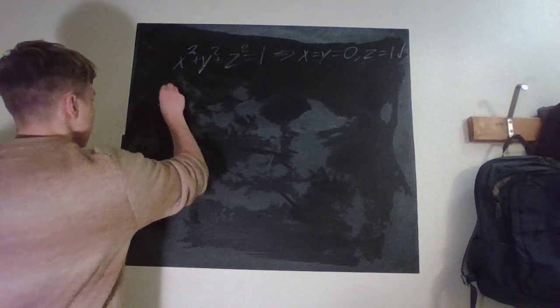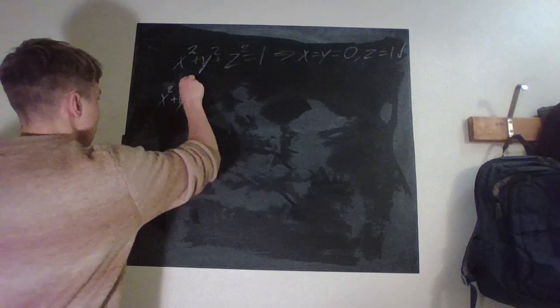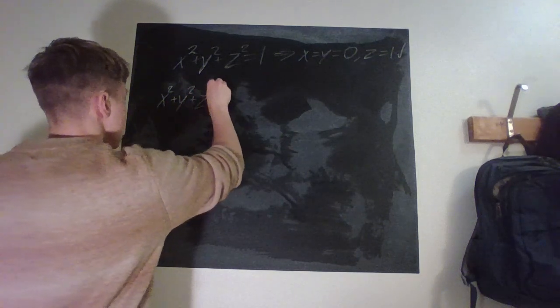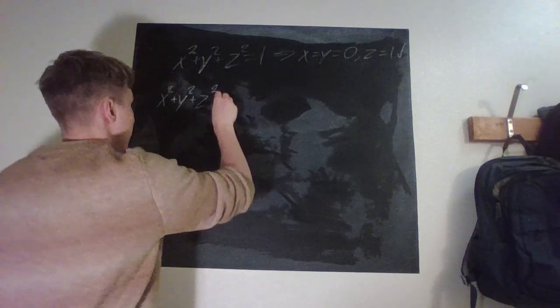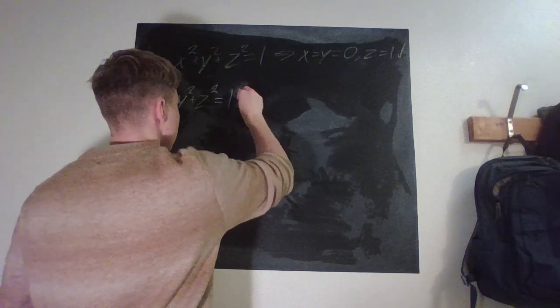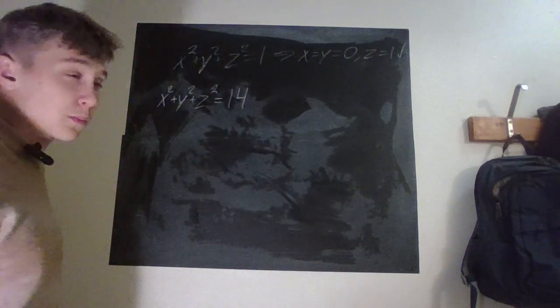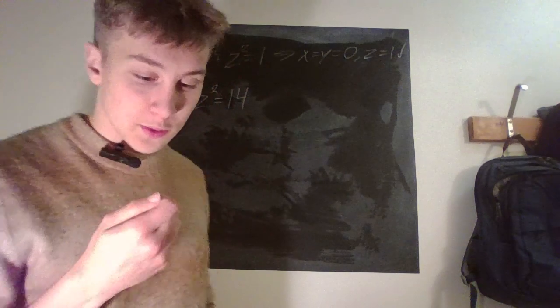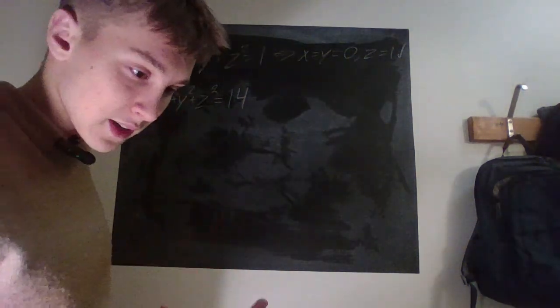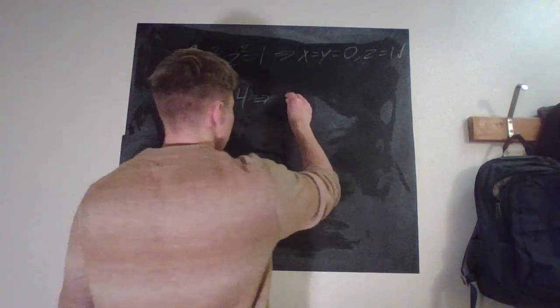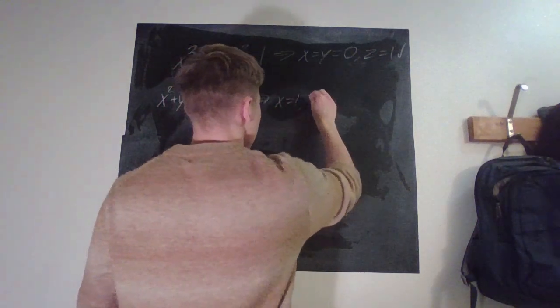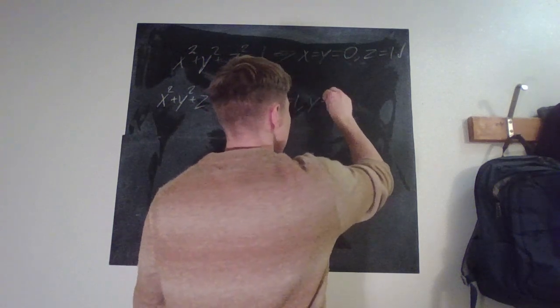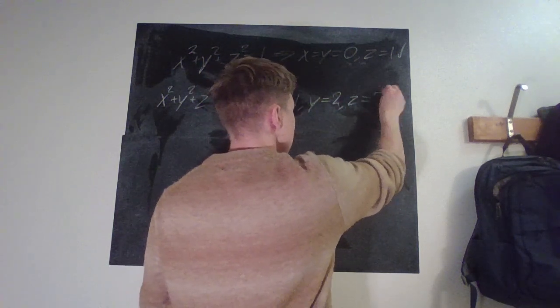For n=1, we want x squared plus y squared plus z squared equal to 14. We need integer solutions. The squares we have available are: 1 squared is 1, 2 squared is 4, 3 squared is 9, 4 squared is 16 — that's too big. So we have to use 1, 4, and 9, and 1 plus 4 plus 9 is 14. So our solution is x equals 1, y equals 2, and z equals 3.